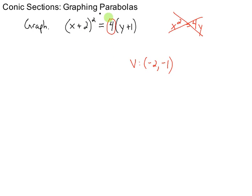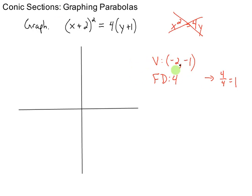Alright, the focal diameter is 4, so that means the distance to the focus is going to be 4 divided by 4, which is 1. So let's start graphing. So I'll begin by plotting my vertex, negative 2, negative 1.